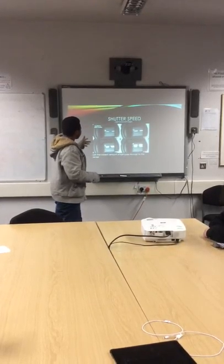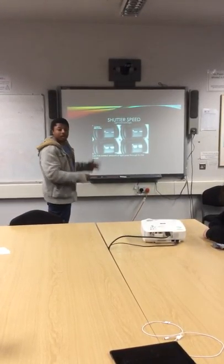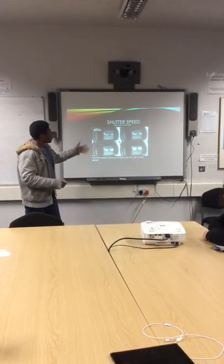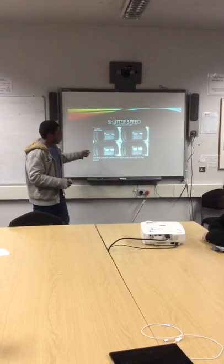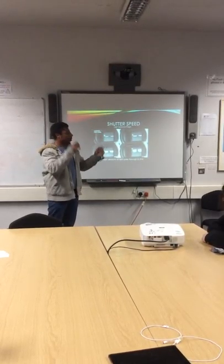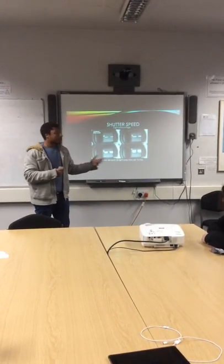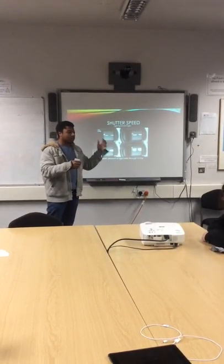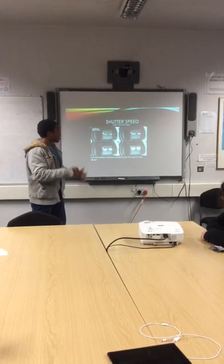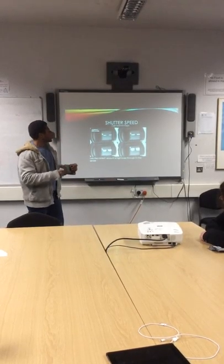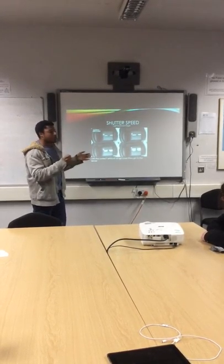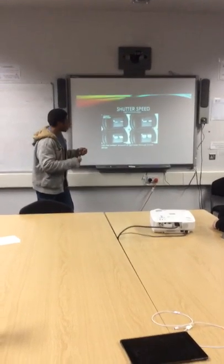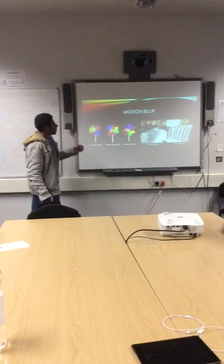Shutter speed — different types of shutter speeds, fast and slow. Slow shutter speeds let in more light. Faster shutter speeds are used to capture action, and a fast shutter speed also lets in less light.